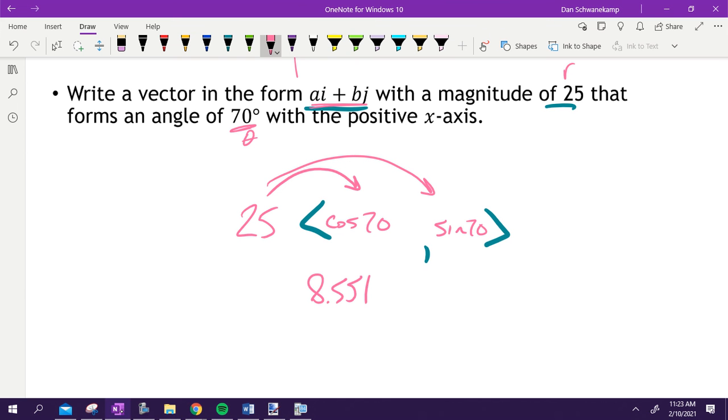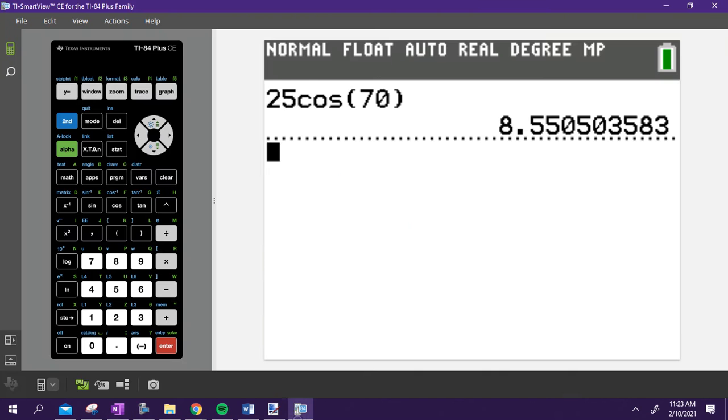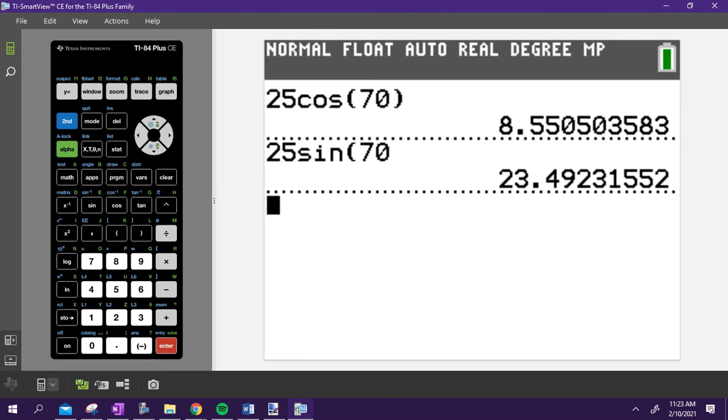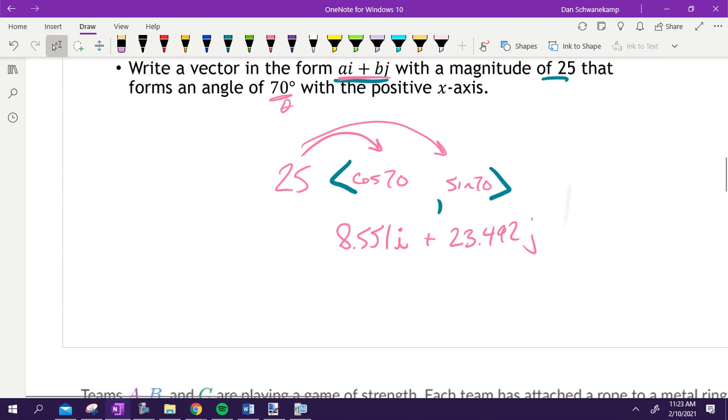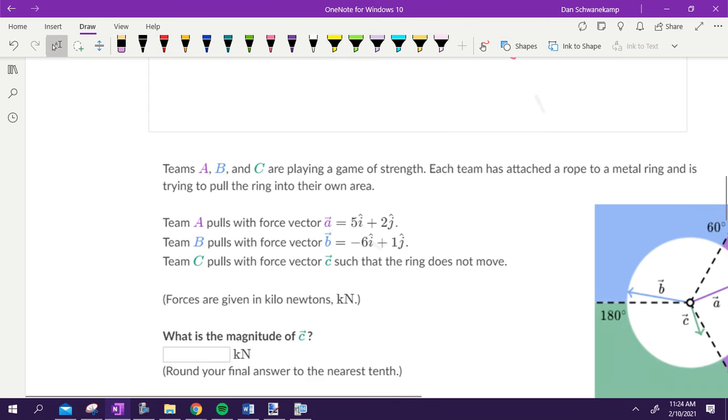It is. It did ask me to put it in this form. So that would be i plus. Then I would find my j. So 25 sine of 70. I type it in. I hit enter. 23.492. Make sense what we're doing there? Don't let that be hard. It's not. It's just saying, oh, I got a magnitude and an angle. Multiply it by sine and cosine to get me my values. Good there? All right.